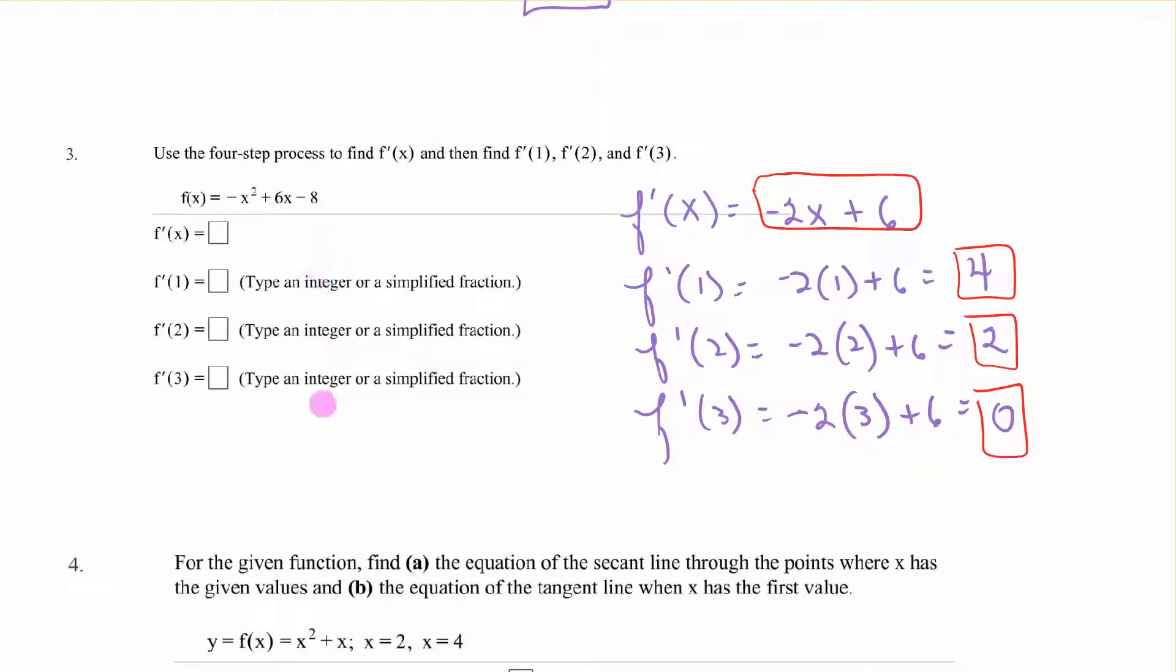In this one, here is your function: -x² + 6x - 8. We could do this in our calculator or by hand. The derivative of this one: 2 times -1 is -2, the exponent drops 1, so -2x. The derivative of 6x is just 6. The derivative of a constant is 0. So here's my general derivative, f' = -2x + 6, and then I plug in the three values you're given: you get 4, 2, 0.